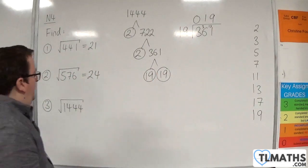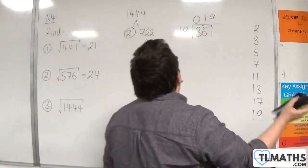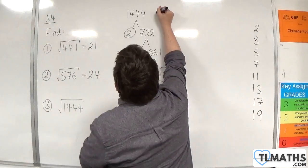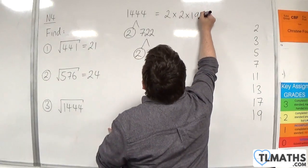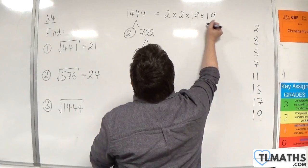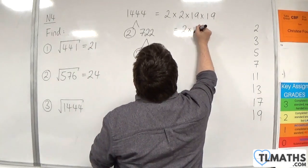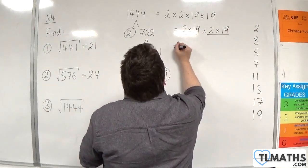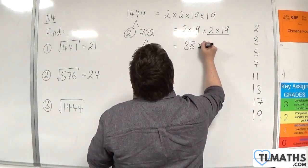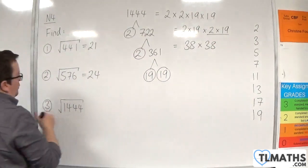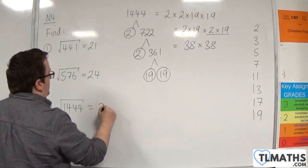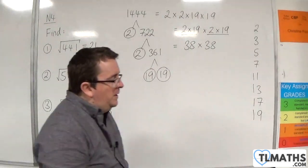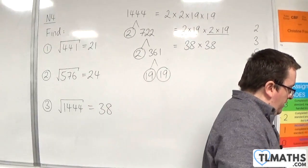So 1,444 is 2 times 2 times 19 times 19. That's 2 times 19 times 2 times 19, so that's 38 times 38. The square root of 1,444 is 38. Now that one was tough — lots of short division to double check.